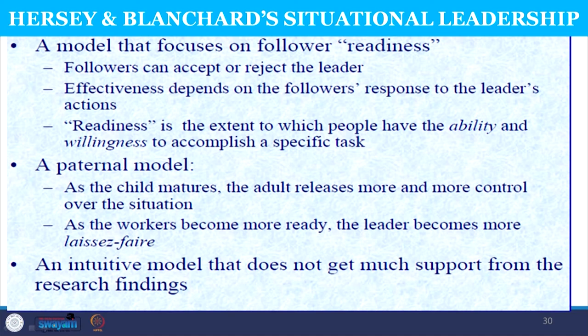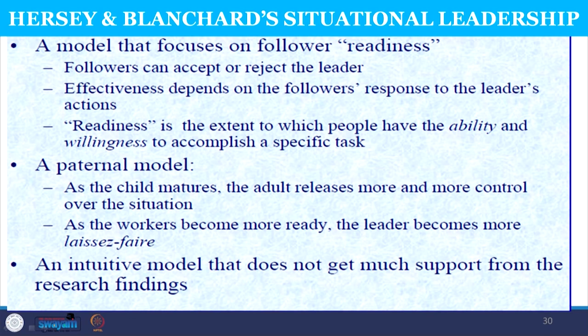This theory uses the same two leadership dimensions as Fiedler's theory — task and relationship behavior — but Hershey and Blanchard consider each as either high or low and combine them into four leadership styles. The logic of the parental model is that as the child matures, the parent releases control. Similarly, when a subordinate attains higher levels of maturity, the leader need not exercise control and should delegate more power to the subordinate. As the worker becomes more ready, the leader becomes less directive and will only provide information without intervening in the task.